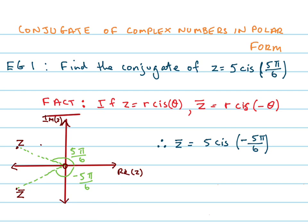For this example here, we've got 5 cis 5 pi on 6. All we do is we change the sign of theta, and we are done.